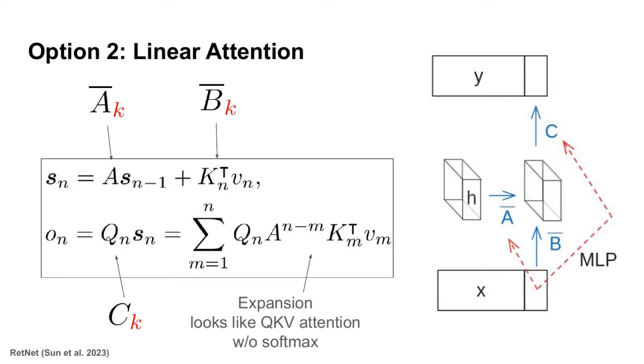A second option is an approach known as linear attention. This approach is used in many different papers, but here I'll use an example from RetNet to explain how it works. To make this trick more clear, we're going to rename B-bar as K, and rename C as Q. We'll also rename our input X as V.